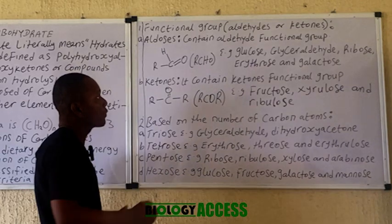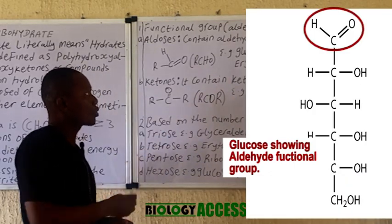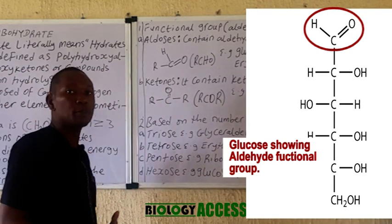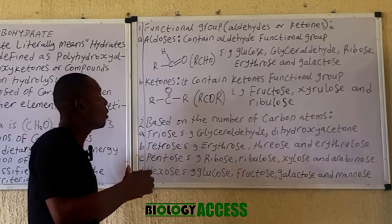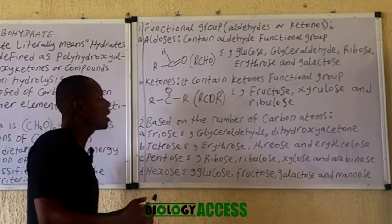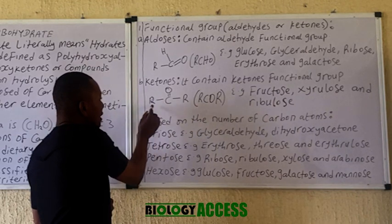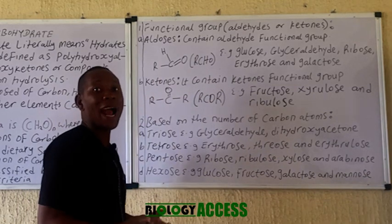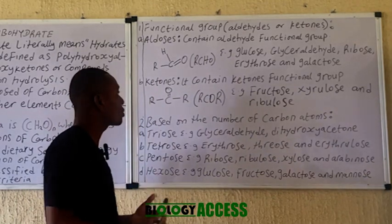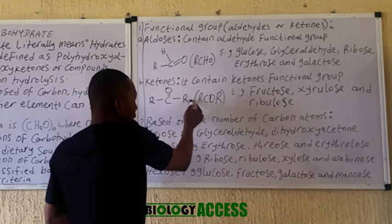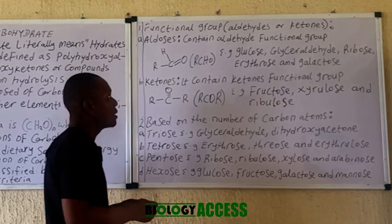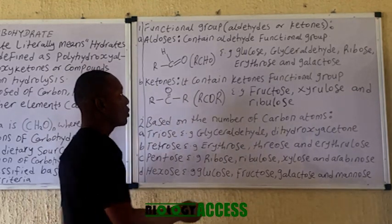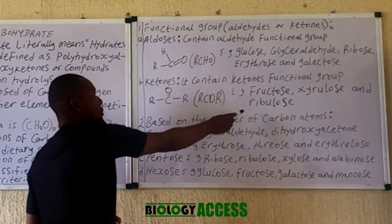The structure of glucose indicating the aldehyde functional group is displayed on the board. Now let's take a look at the ketones, which is the second group of carbohydrates based on functional group classification. The ketone functional group is indicated on the board. Examples of carbohydrates with the ketone functional group include fructose, xylulose, and ribulose. The structure of fructose displaying the ketone functional group is being displayed on the board.